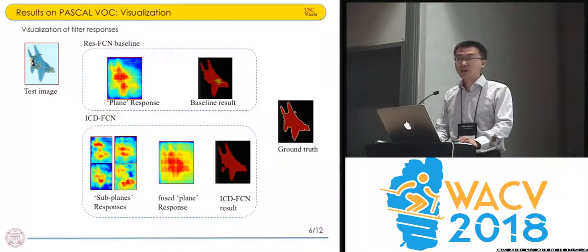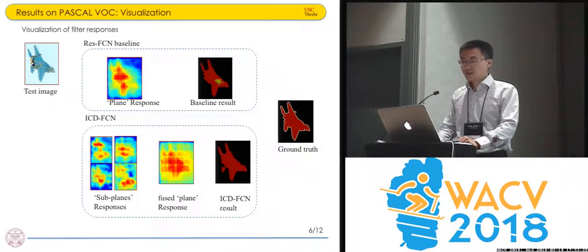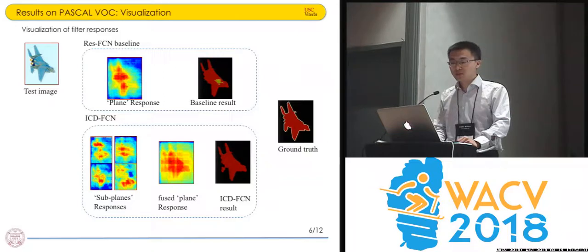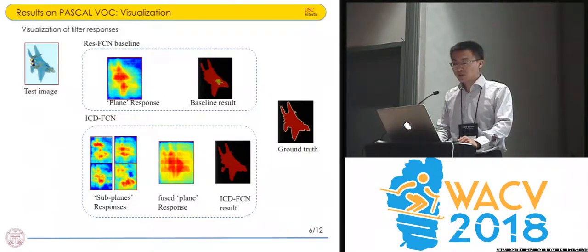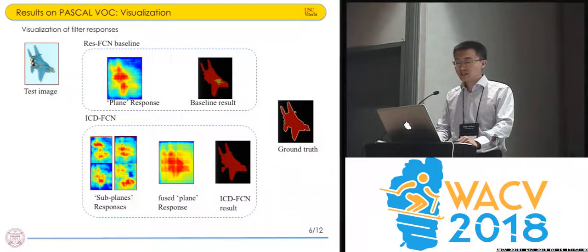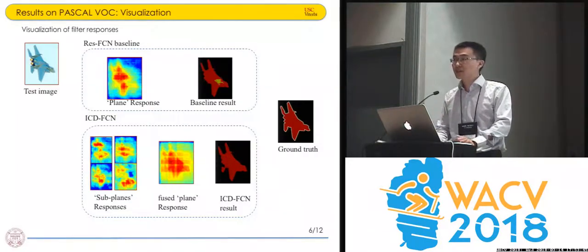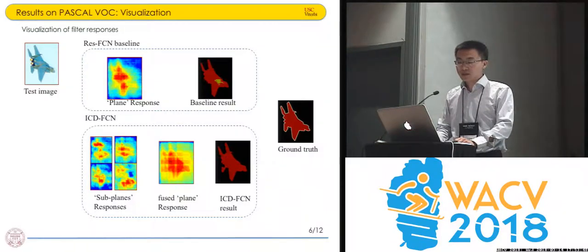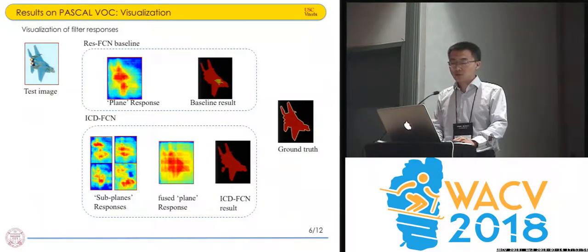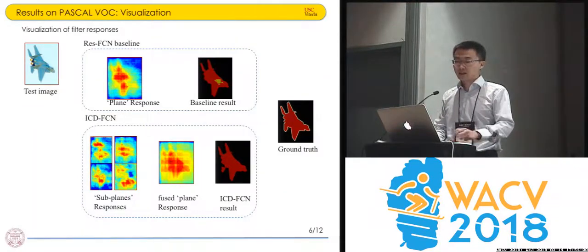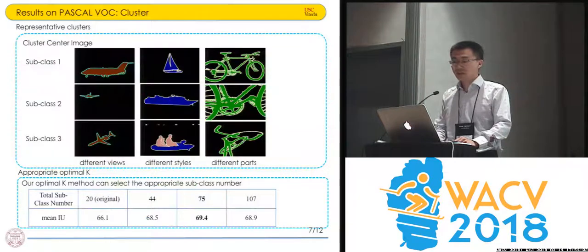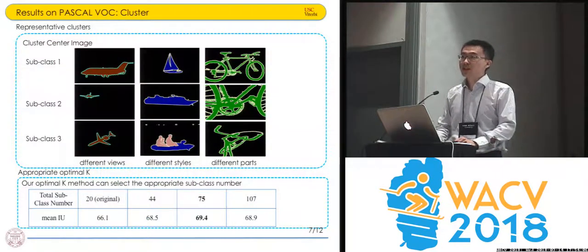There is some visualization of the results on Pascal VOC. The first line is the residual FCN baseline we use. You can see the filter response of the plane and the baseline result — there are some unexpected patterns in the baseline results. By using our ICD-FCN (Intraclass Difference FCN), we fuse the sub-plane responses into one whole filter response and then generate our ICD-FCN result.